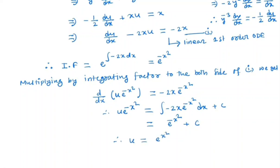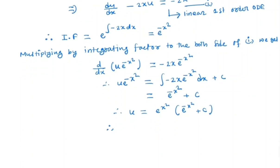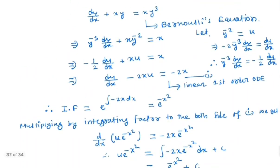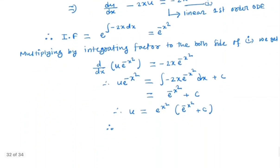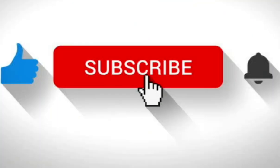So u equals e to the power x² times (e to the power minus x² plus C), which simplifies to u equals 1 plus C · e to the power x². Since u equals y to the power minus 2, the general solution is y⁻² equals 1 plus C · e to the power x².